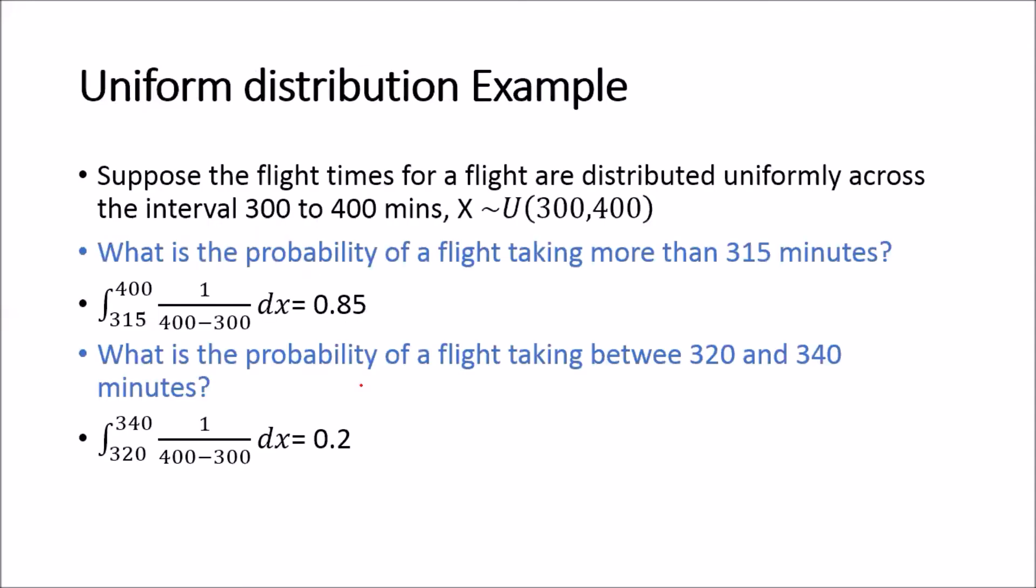Let's suppose that flight times for a flight are distributed uniformly across the interval 300 to 400 minutes. So we know then that if we let the flight times, the amount of time taken for the flight X, you know that X is distributed as a uniform random variable with the lower value of 300 and the upper value of 400.